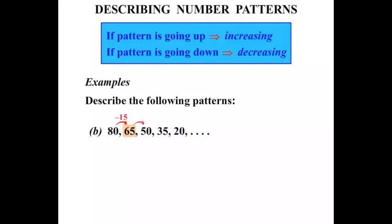From 65 down to 50 again subtract 15. From 50 to 35 we subtract 15. From 35 to 20 we subtract 15. So there is a constant pattern there. Because the pattern is going down by 15 we say the pattern is decreasing by 15.